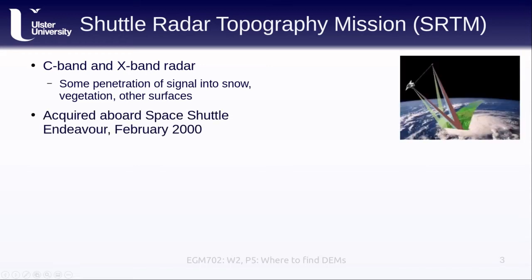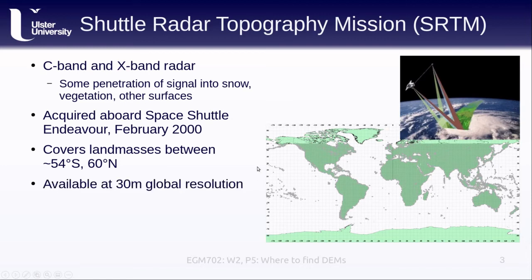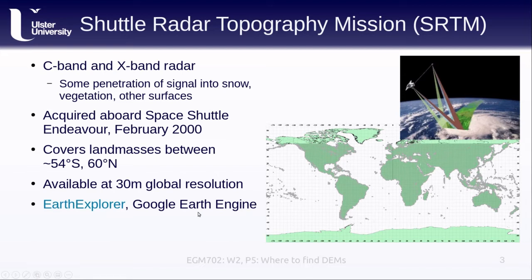SRTM was acquired using instruments aboard the Space Shuttle Endeavour in February 2000. The C-band radar covers all land masses between about 54 degrees south and 60 degrees north. The X-band radar covers much of the same latitude extent but is not complete — there were fewer acquisitions, so there's less data coverage. All of this is available at 30 meters global resolution, and the C-band radar is available via Earth Explorer from the USGS as well as having been ingested into Google Earth Engine.